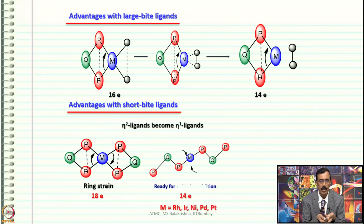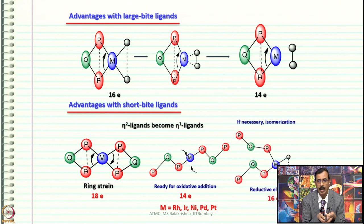The bidentate ligand becomes temporarily monodentate, generating vacant coordination sites and a 14-electron species. Once reductive elimination is over, the dangling phosphorus donor atoms come back and the catalyst is regenerated.